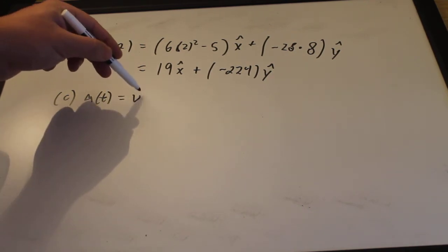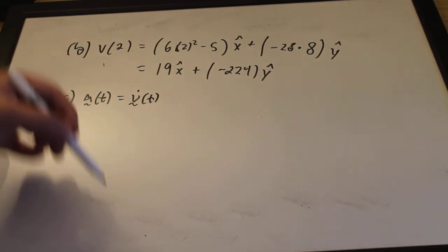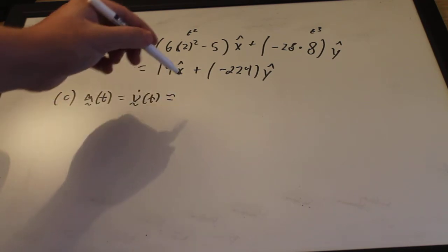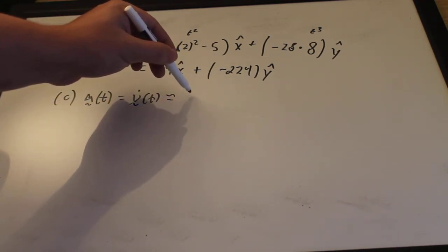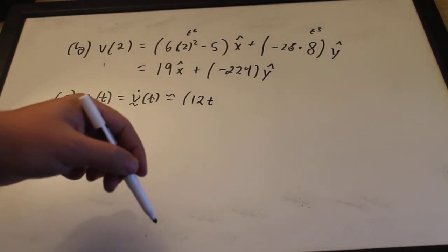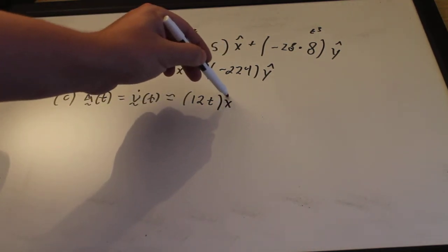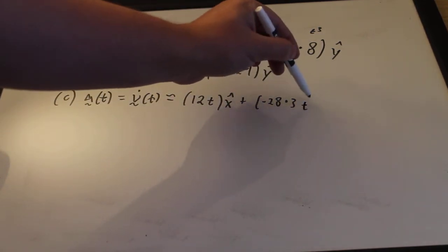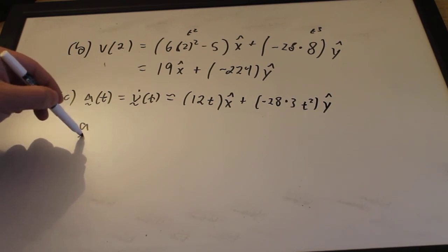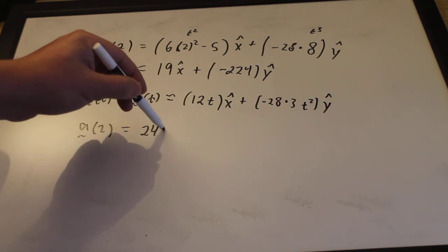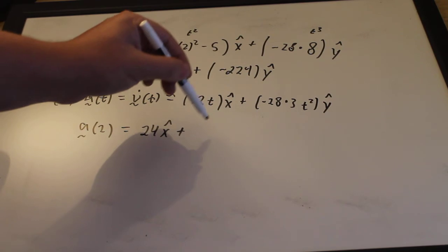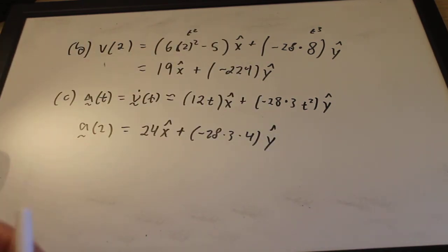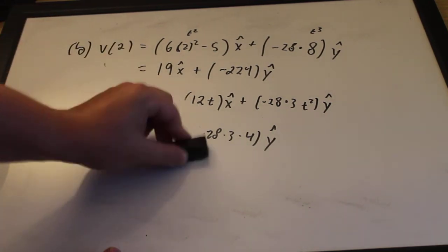Part C wants the acceleration. It's the derivative of the velocity vector. So we have that here. Remember this is t squared and this is t cubed. And so we get 6 times 2 is 12t, 2 minus 1 is 1. Derivative of the constant is 0. So that's our x. Plus negative 28 times 3 times t squared y. And so our a of 2 is 24x plus negative 28 times 3 times 4 y. Whatever that number is. Okay. I'm going to keep this because we're using it for the next part.